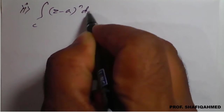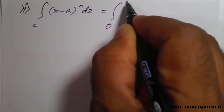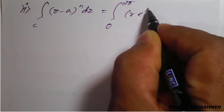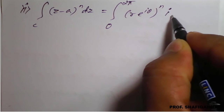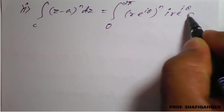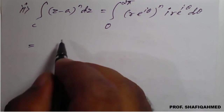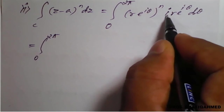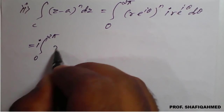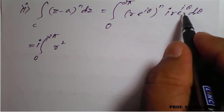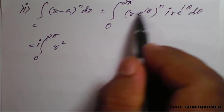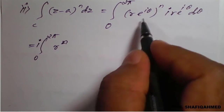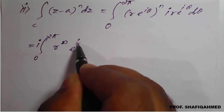Now for the second part: the integration over c of (z minus a)^n dz equals the integral from 0 to 2π of (r · e^(iθ))^n times i · r · e^(iθ) dθ. Opening the bracket, (r · e^(iθ))^n becomes r^n · e^(inθ). Combined with the extra r · e^(iθ) from dz, we get r^(n+1) · e^(i(n+1)θ).